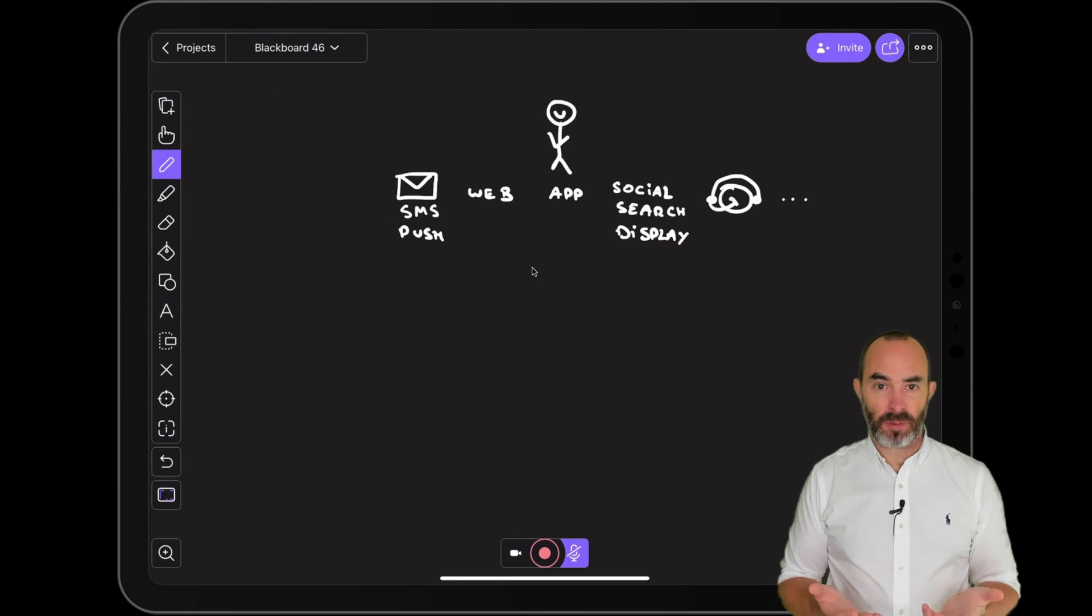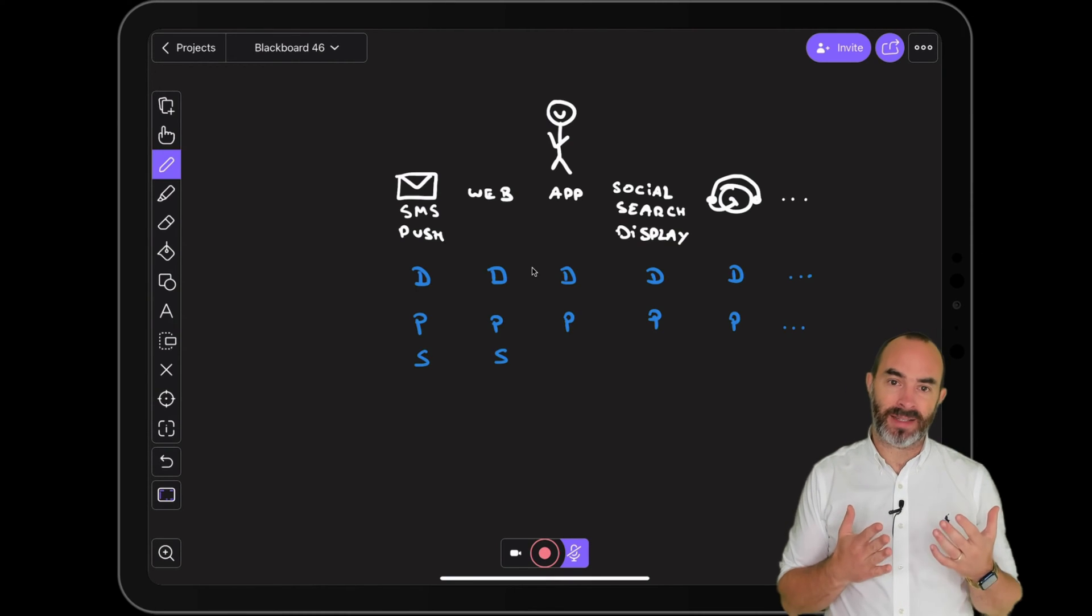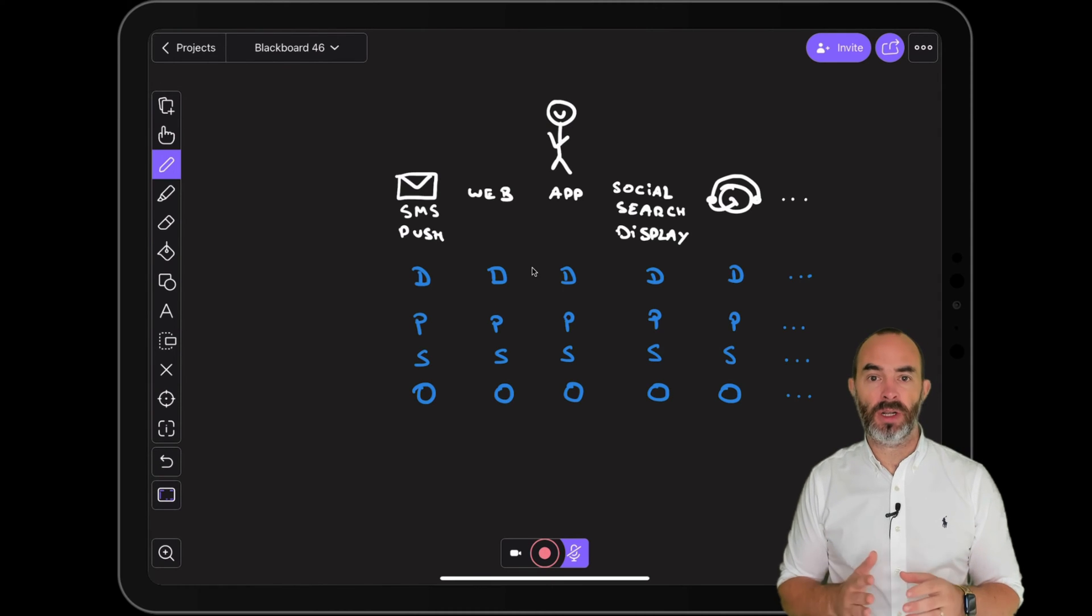Every interaction contains personal information and for every interaction a different identifier is used to recognize the customer. Take a step back and think about your organization and how the different applications you use on a daily basis work. Without any doubt every application is using its own database. Every application identifies the customer in a different way and every application has its own segmentation engine and its own idea about what the best offer for the customer is.